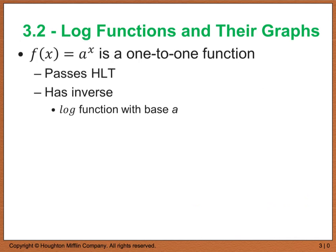Earlier in chapter 1, we talked about inverse functions. And for a function to have an inverse, we talked about the fact that it had to be one-to-one, or in other words, it had to pass the horizontal line test.